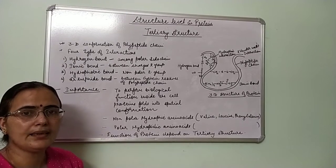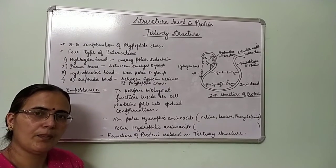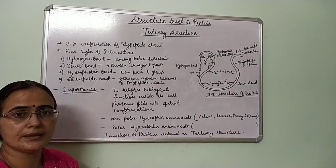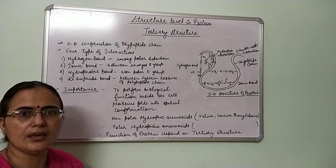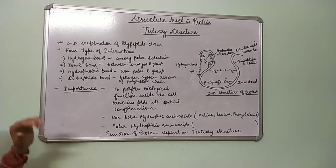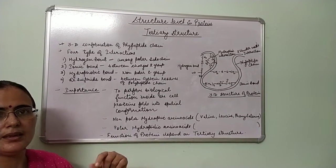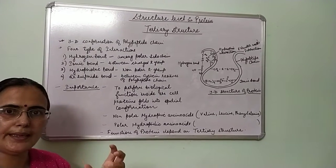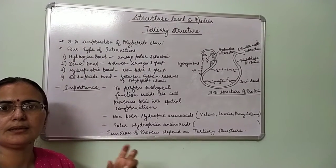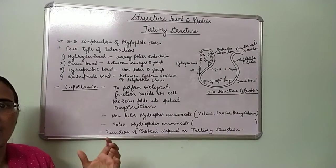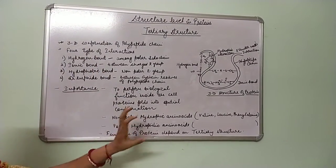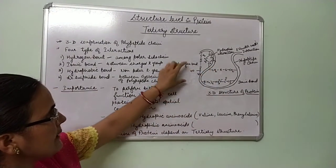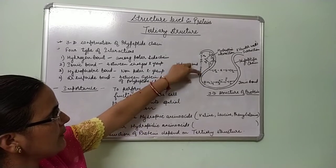The polypeptide chain of each protein consists of a definite sequence of amino acids, which arrange in a definite manner to form a three-dimensional conformation. Various types of bonding occur among the side chains or R groups of these amino acids, and their interactions constitute this three-dimensional structure.